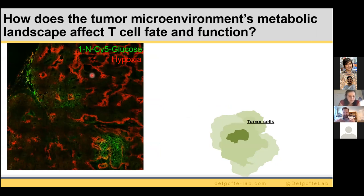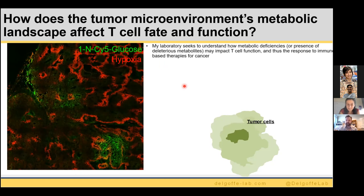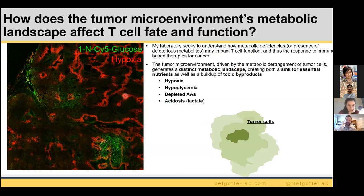What is my lab interested in? We are excited about understanding the metabolic requirements for T-cell activity, T-cell fate and function. From studying mTOR back in the old days, it's now about understanding how different environments might change the way that T-cells see nutrients. This is exemplified within the tumor microenvironment, which is a very metabolically distinct place. My lab seeks to understand how metabolic deficiencies or deleterious metabolites may impact T-cell function and the response to immune-based therapies for cancer.